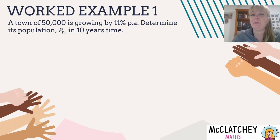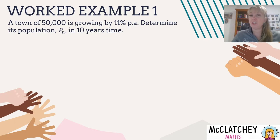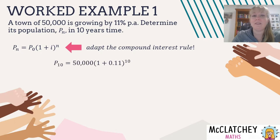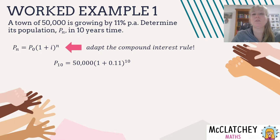A town of 50,000 people is growing by 11% per annum. Determine its population P_n in 10 years time. I could use the geometric sequence rule from my formula sheet, but I'm going to show you that this is a model of growth by adapting the compound interest rule. My amount at time zero — my principal — is 50,000, and my interest rate is the growth rate of 11%, changed into a decimal, raised to the power of 10 for 10 years.